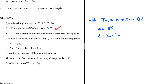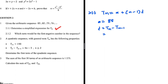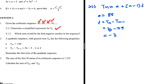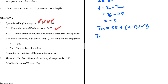We can find d by computing t_n minus t_(n-1). So we take 76, which is t4, and subtract 79 to get minus 3. Therefore tn = 85 + (n-1) × (-3).